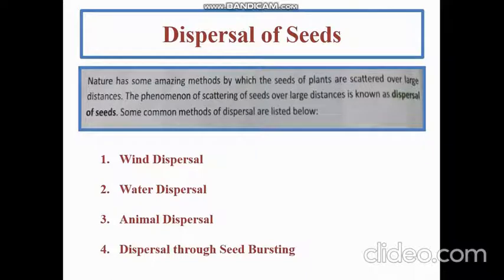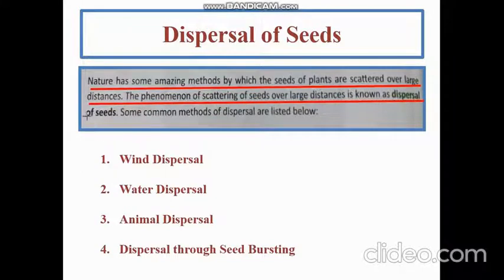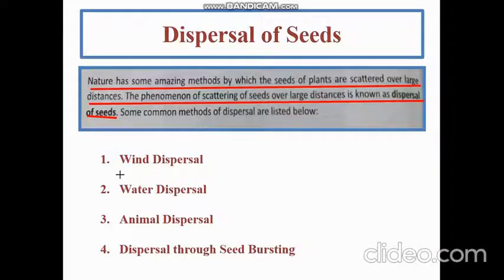Nature has some amazing methods by which the seeds of plants are scattered over large distances. The phenomena of scattering of seeds over large distances is known as dispersal of seeds. If all seeds fall at the same place, they will be unable to grow healthy — they need to go away from their parent tree, like when you grow up and leave your parents' home to go to college.